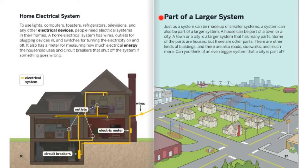Part of a larger system. Just as a system can be made up of smaller systems, a system can also be part of a larger system. A house can be part of a town or a city. A town or a city is a larger system that has many parts. Some of the parts are houses, but there are other parts — other kinds of buildings, roads, sidewalks, and much more. Can you think of an even bigger system that a city is a part of?